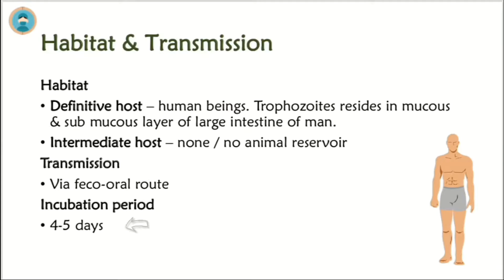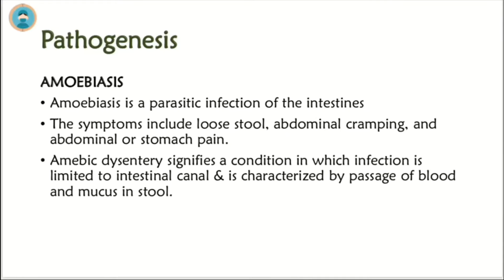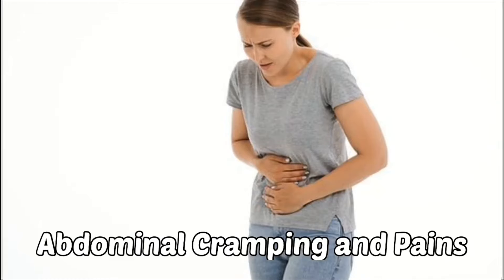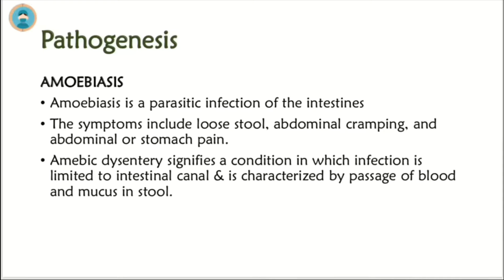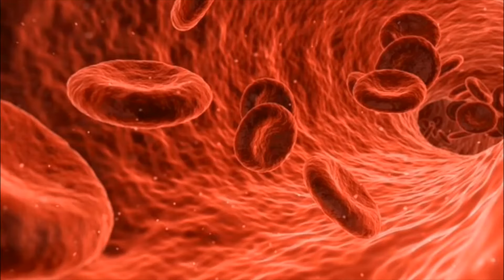The incubation period — the time between ingestion and appearance of the first symptom — is four to five days for Entamoeba histolytica. Pathogenesis: Amoebiasis is a parasitic infection of the intestines, both large and small. Symptoms include loose stool, abdominal cramping, and abdominal pain. Amoebic dysentery signifies a condition in which infection is limited to the intestinal canal and is characterized by passage of blood and mucus in the stool.